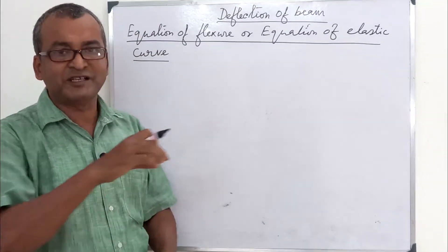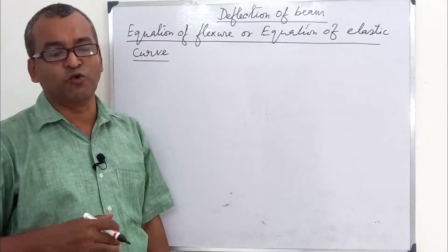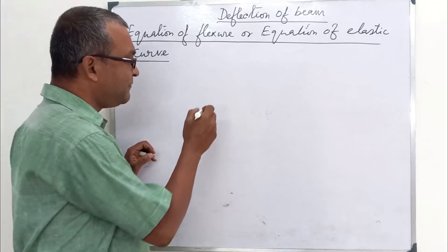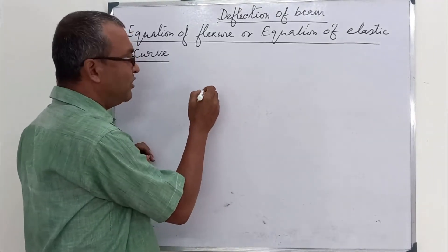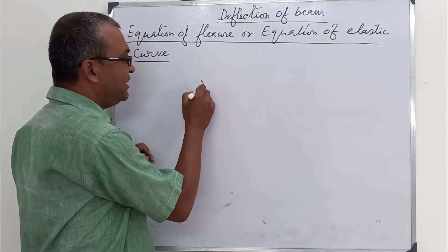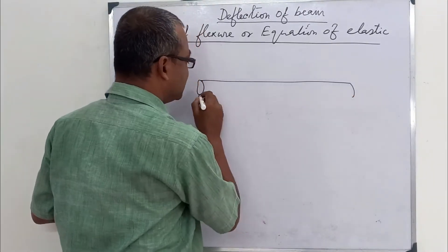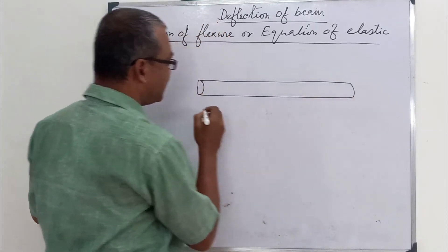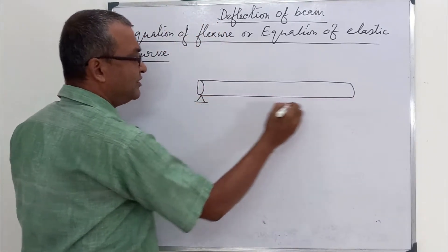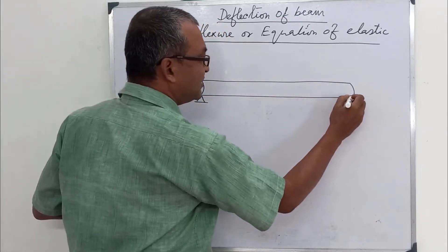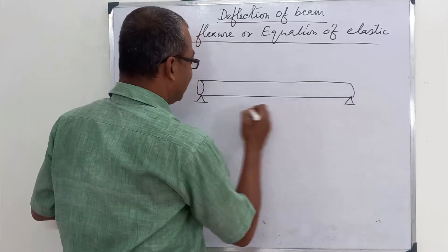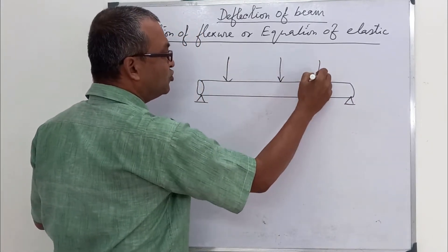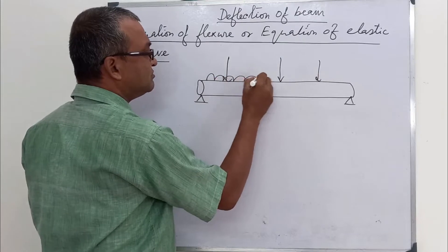A beam carries a transverse load. Transverse load means the load is perpendicular to the axis of the beam. The beam is like a rod. If I place this beam and support it, this is transverse loading — it could be a point load or a distributed load.